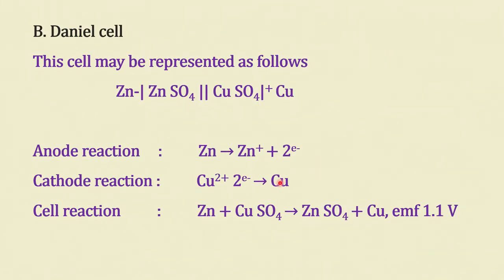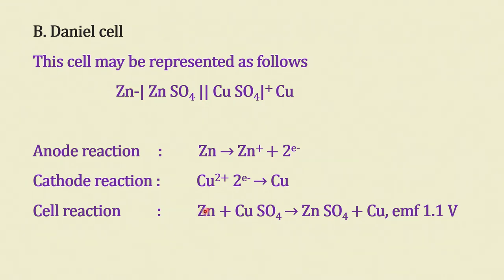The Daniell cell is a very well known standard cell. It is represented as: zinc | zinc sulfate || copper sulfate | copper. The anode reaction is Zn → Zn²⁺ + 2e⁻; the cathode reaction is Cu²⁺ + 2e⁻ → Cu; and the overall reaction is Zn + CuSO₄ → ZnSO₄ + Cu. The EMF of this cell is 1.1 volts.